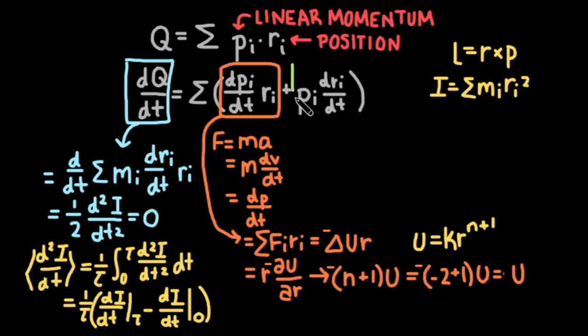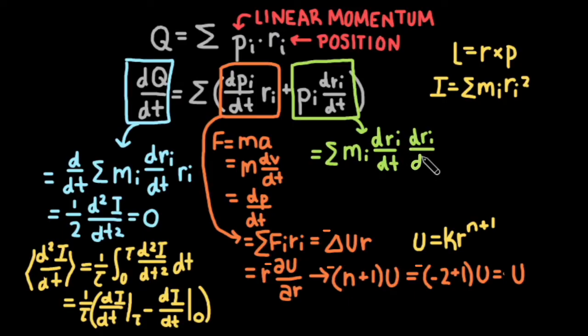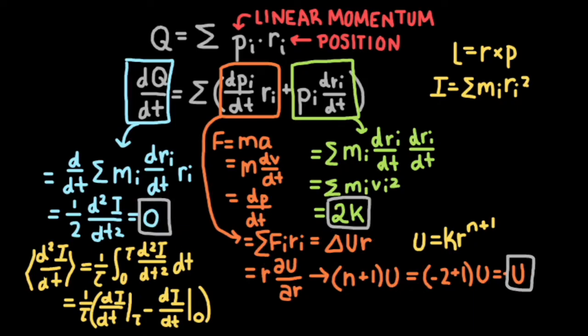We can rewrite the second term, p times dr dt, as m times dr dt times dr dt, which is just mass times the velocity squared. You may recognize this as 2 times the formula for kinetic energy. By now, you can probably see that the end is near.